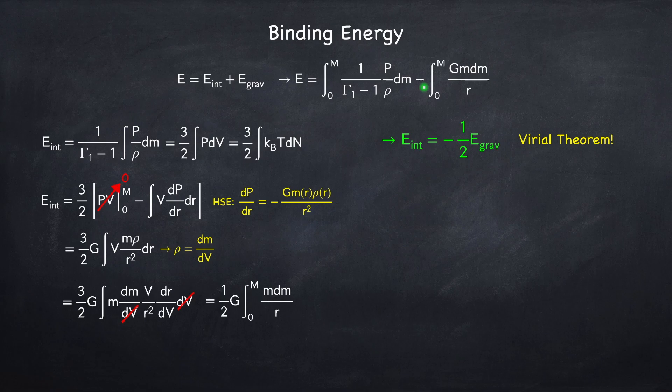Since the internal energy is negative one-half the gravitational energy, then the total energy will be half of the gravitational energy. The gravitational energy is this integral right here. It's just taken from Newton's Law of Gravitation.